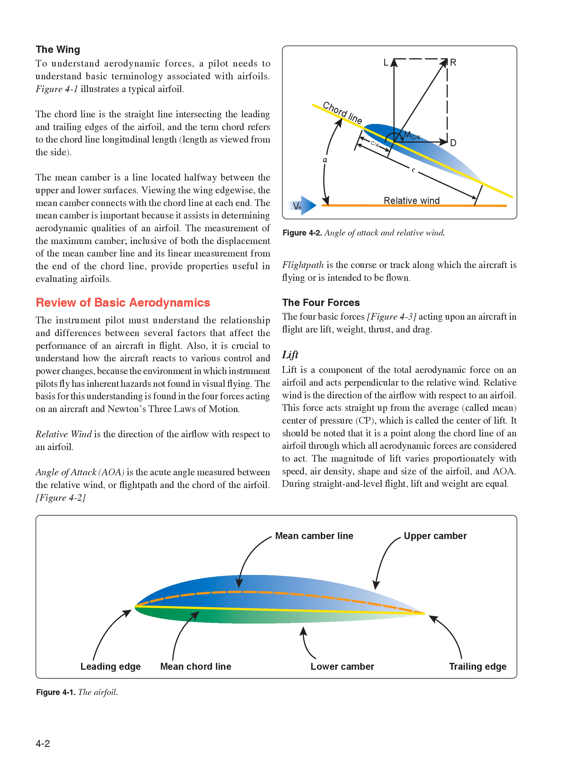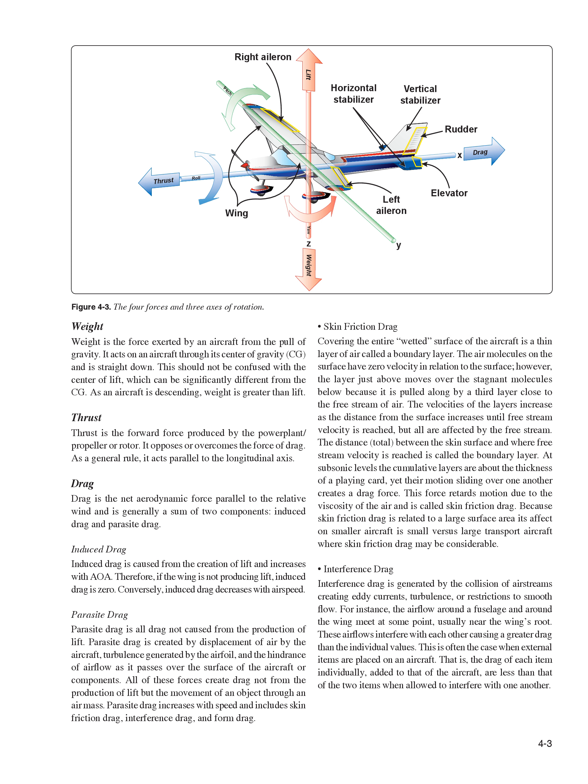The magnitude of lift varies proportionally with speed, air density, shape and size of the airfoil, and AOA. During straight and level flight, lift and weight are equal. Weight is the force exerted by an aircraft from the pull of gravity. It acts on an aircraft through its center of gravity (CG) and is straight down. This should not be confused with the center of lift, which can be significantly different from the CG. As an aircraft is descending, weight is greater than lift.